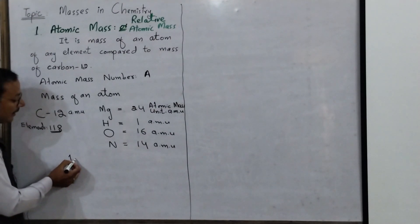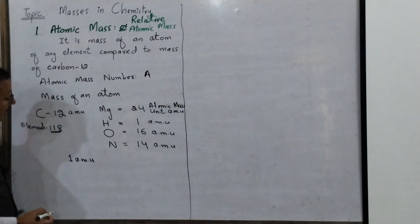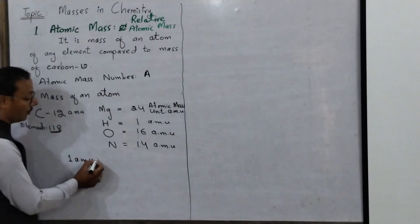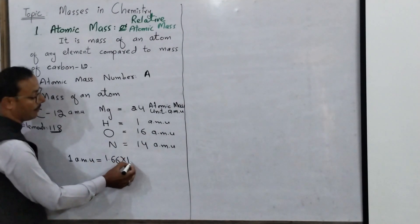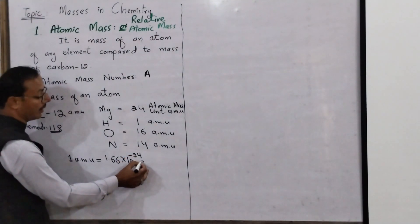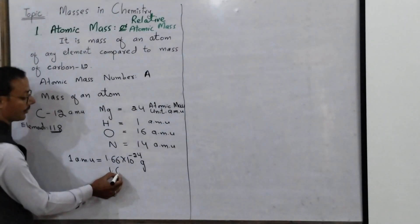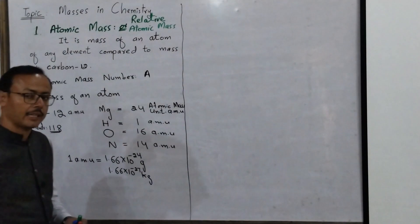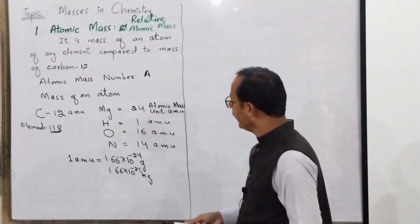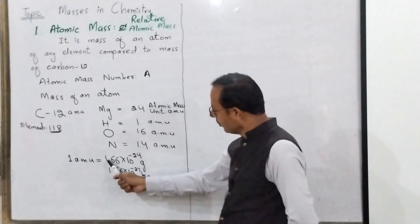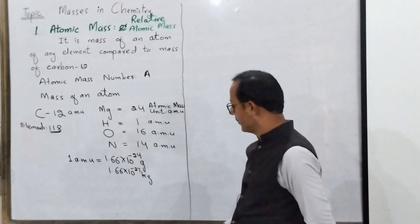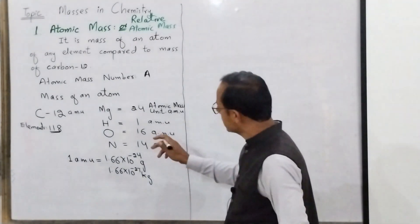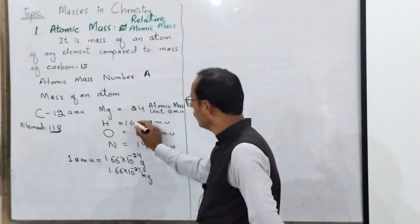And students, 1 AMU — how many grams is this mass equal to? Obviously this is a mass and it needs to be shown in grams, i.e. in SI system units. So 1 AMU is equal to 1.66 × 10⁻²⁴ grams. If we write it in kilograms, it will be 1.66 × 10⁻²⁷ kg. So you can see 1 AMU is a very, very small mass — because it is the mass of one atom of hydrogen.